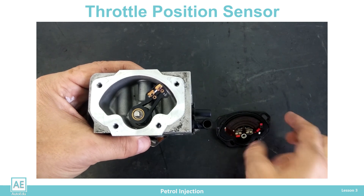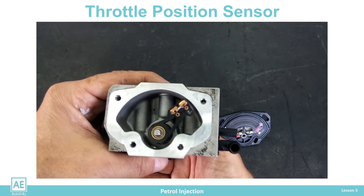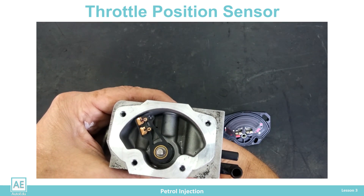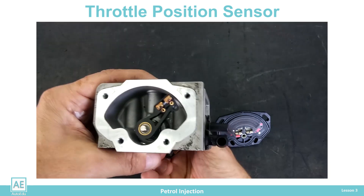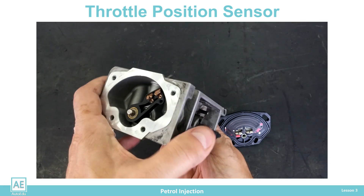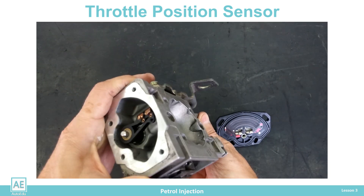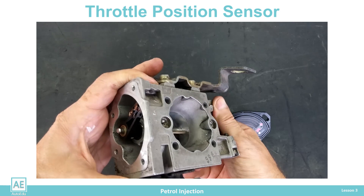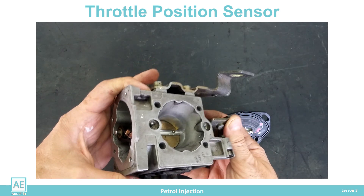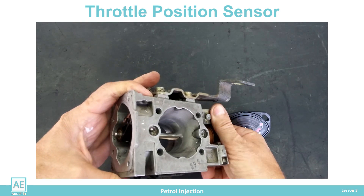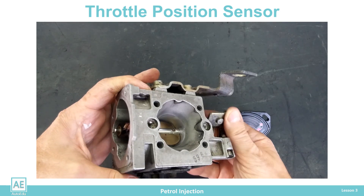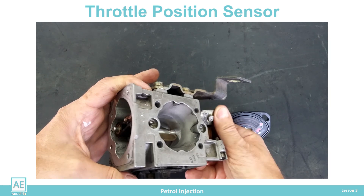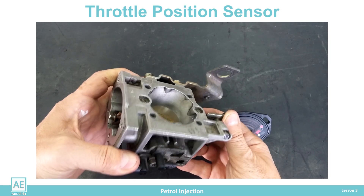In this way, the ECU informs the driver that the vehicle needs to be serviced due to a fault in the injection system. Until the sensor is replaced, the system functions correctly thanks to the double potentiometer in the throttle position sensor.